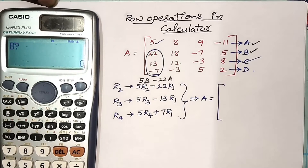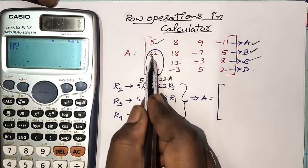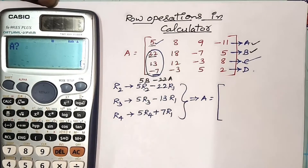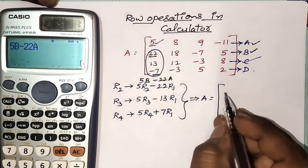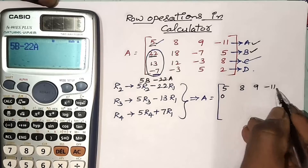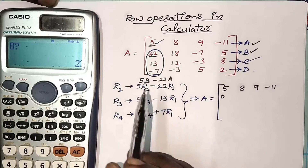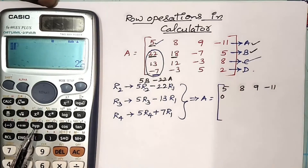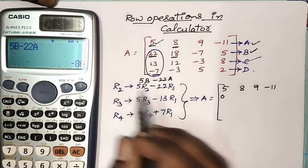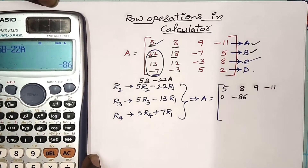Press the calculate button. The calculator asks: what is the value of B? Our value of B is 22. Then it asks for the value of A — enter 5. You get 0, so the first element in the second row is 0. For the next element, B value is 22 and A value is 8, and I get minus 86.